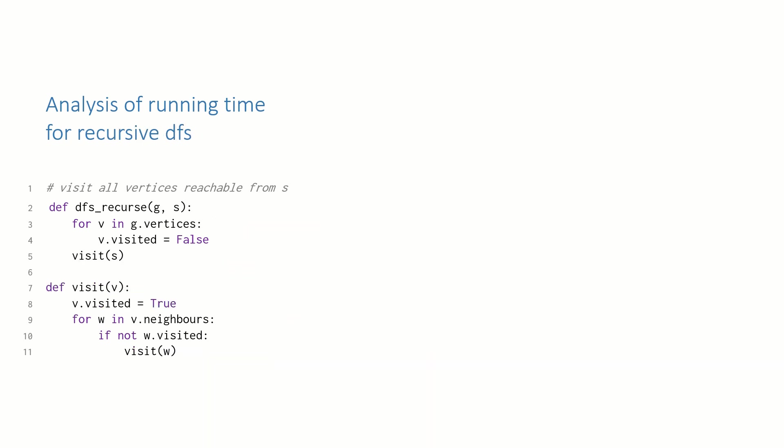Good. Let's do the same thing now for recursive depth-first search. The initial loop over all the vertices is big O of V. We visit each vertex at most once, thanks to the visited flag, which means that over the course of running the entire algorithm, we hit line 8 at most V times, so that cost is big O of V. And similarly, the total number of times we run through lines 9 to 11 over the course of the entire algorithm is big O of E. And this gives us a total run time big O of V plus E. Same as stack-based implementation.